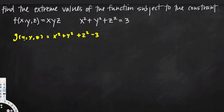After getting this function, we take the partial derivatives with respect to x, y, and z for each function, and equate them. Whatever partial derivative we get from g(x,y,z), we multiply it by the Greek letter lambda — the Lagrange multiplier.